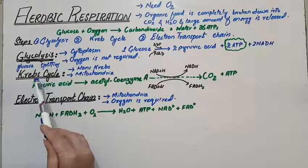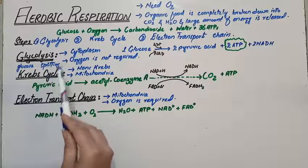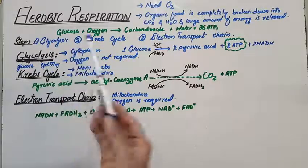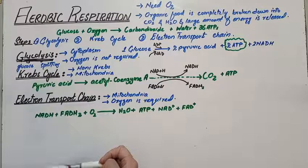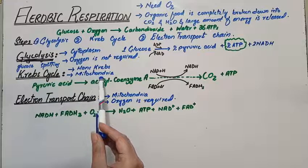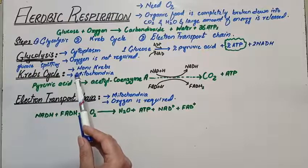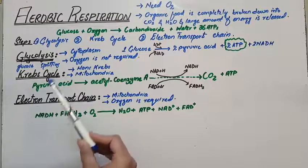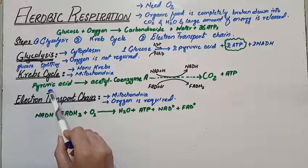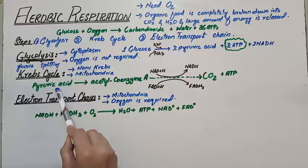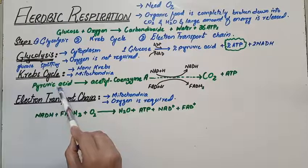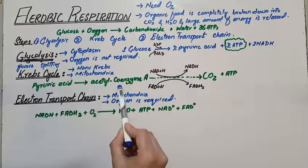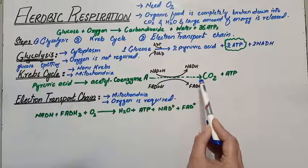The next step is the Krebs cycle, named after its discoverer Hans Krebs, who was a British scientist. The Krebs cycle occurs in the mitochondria, where all the necessary enzymes are present. Before entering the Krebs cycle, the three-carbon pyruvic acid molecule cannot enter the mitochondria directly — it must first be converted into a two-carbon compound called acetyl coenzyme A.